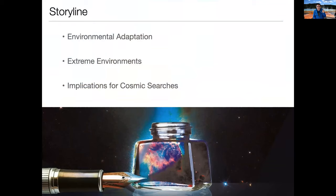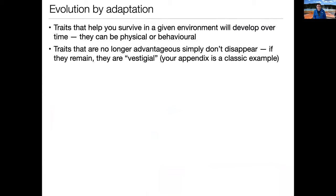We'll start by talking about environmental adaptation — we've touched on this before but I want to make a very specific point. Natural selection and evolution by adaptation is the prevalence of traits that help you survive in a given environment. If you are living somewhere and your life is endangered — maybe by predators, maybe by some feature of the environment — then any traits that help you overcome that threat enhance your survivability. Those traits can be both physical or behavioral. It doesn't necessarily have to be just physiology or morphology; behavioral traits are things that some life forms exploit and others don't.